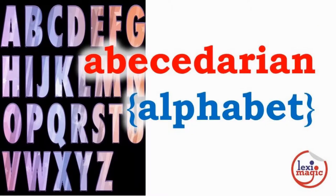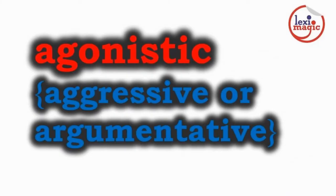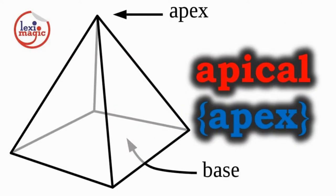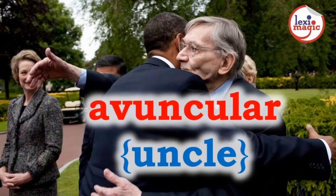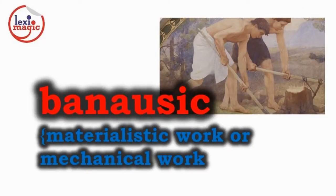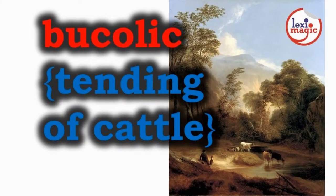Abysidarian refers to something which is rudimentary or as simple as the alphabet. Agonistic indicates being aggressive or argumentative. Apical is the adjective form of the noun apex. Avuncular indicates something related to an uncle. Banausic — something related to materialistic or work or mechanical work.